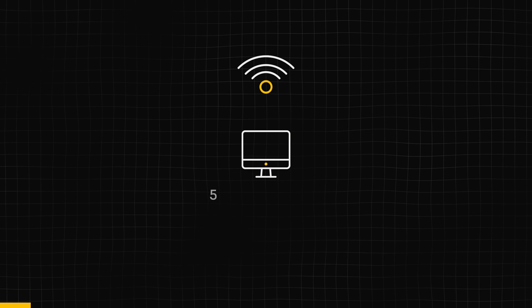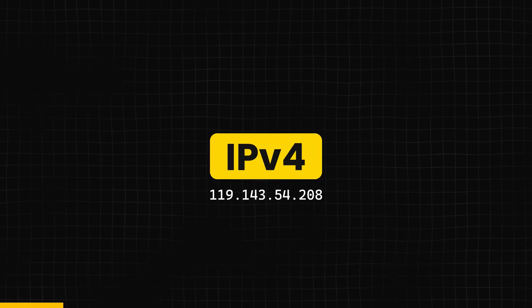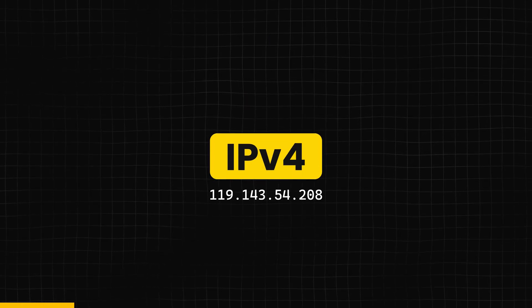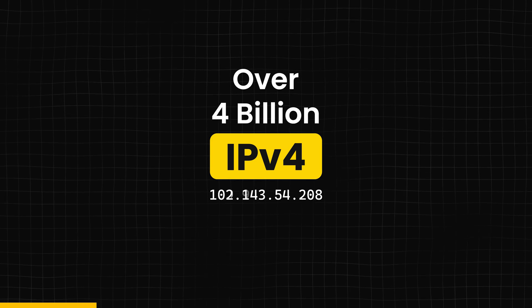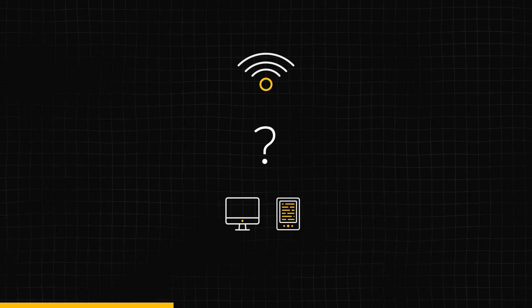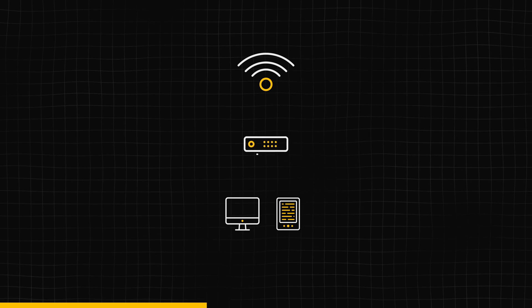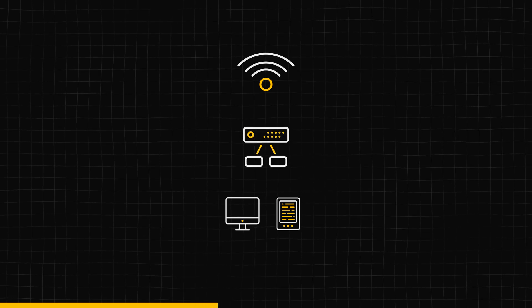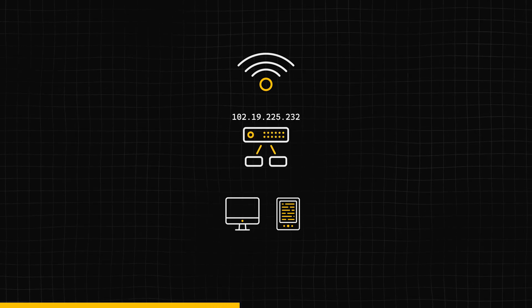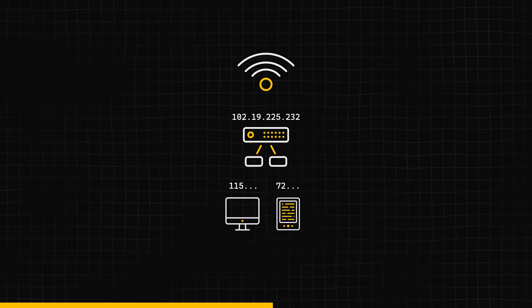Here's how CGNAT works in 60 seconds. In the earlier days of the internet, each connected device had to have a unique IP address. IPv4, which we still use now, has over four billion unique addresses — so there was no way those would run out. But they did, in 2019. So how are all new devices still connecting to the internet?